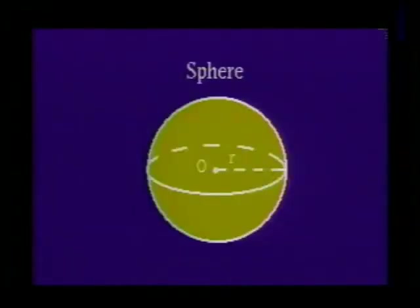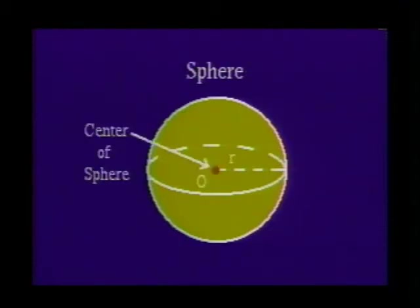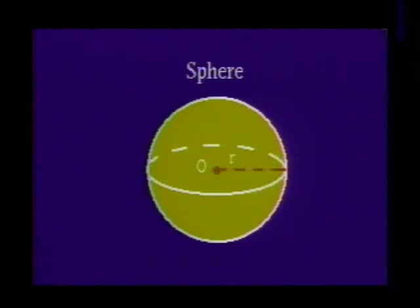A sphere is a three-dimensional solid consisting of the set of all points in space equidistant from a fixed point. This fixed point is called the center of the sphere and the given distance from the center is the radius of the sphere. If two spheres have the same radius, they are congruent spheres.